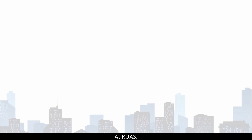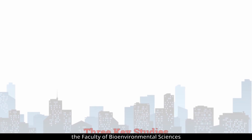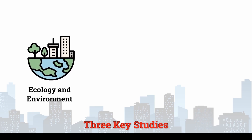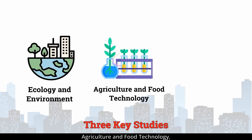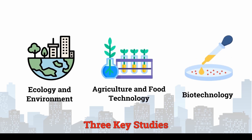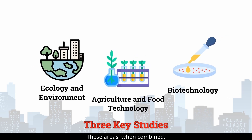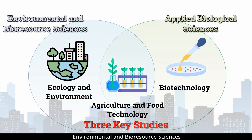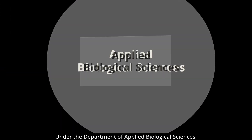At KUAS, the Faculty of Bioenvironmental Sciences encompasses three key areas of study: Ecology and Environment, Agriculture and Food Technology, and Biotechnology. These areas, when combined, form the Departments of Environmental and Bioresource Sciences and Applied Biological Sciences.